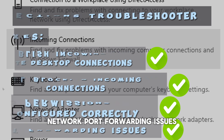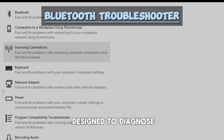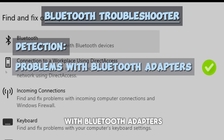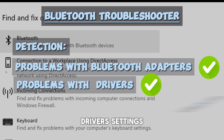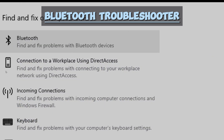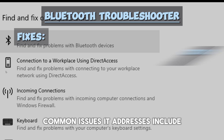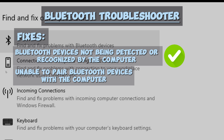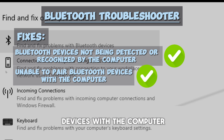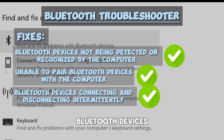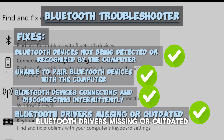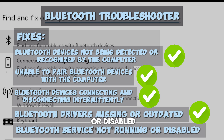Network port forwarding issues. The Bluetooth troubleshooter is designed to diagnose and resolve issues related to Bluetooth connectivity and functionality. It can detect problems with Bluetooth adapters, drivers, settings, and paired devices. Common issues it addresses include Bluetooth devices not being detected or recognized, unable to pair Bluetooth devices, Bluetooth devices connecting and disconnecting intermittently, and Bluetooth drivers missing or outdated or service not running.